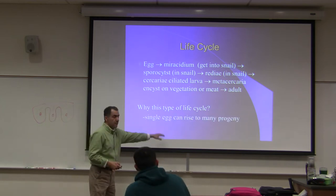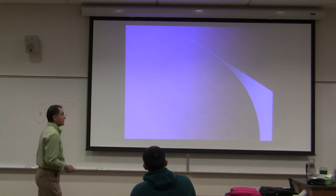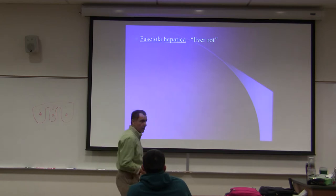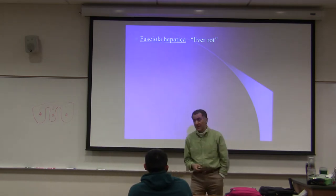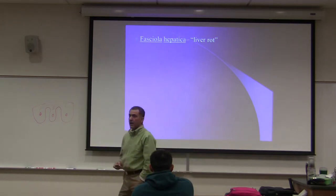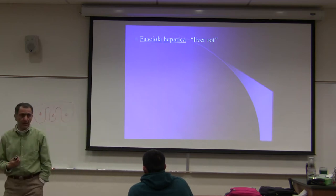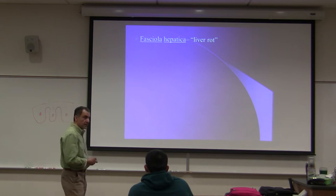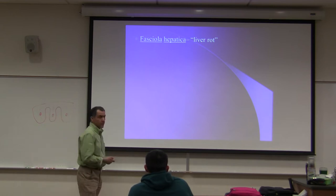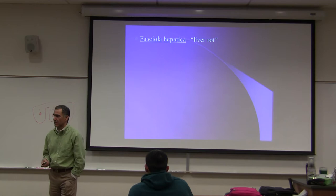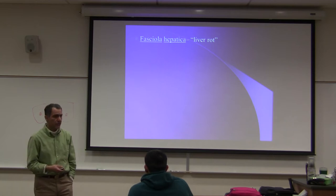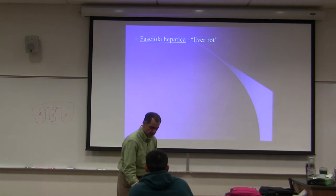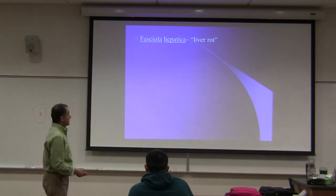A single egg can give rise to many progeny, many offspring. The first organism we are going to study is Fasciola hepatica. The disease name is liver rot. It exists in the United States. Sheep and cows - ruminant animals - can get it. They can have liver rot, and USDA inspectors at slaughter plants condemn the liver of the animal.